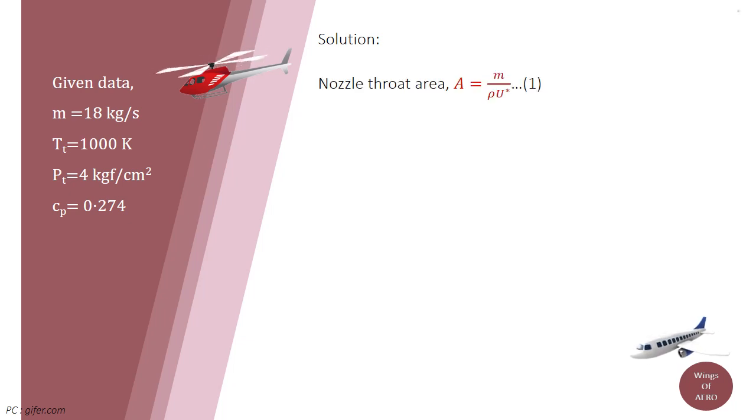So, throat area A is equal to m divided by rho into U star, where m is the mass flow of the gas which is given, and U star is the velocity of gas at throat. We need throat velocity and density of gas to find out the throat area.